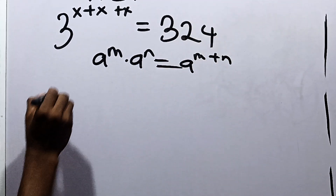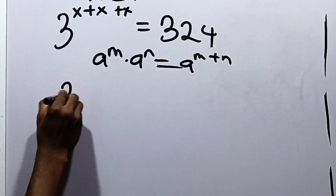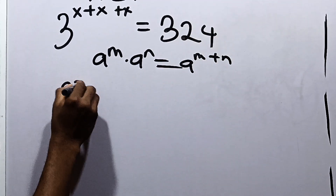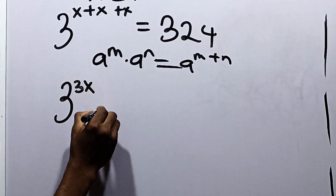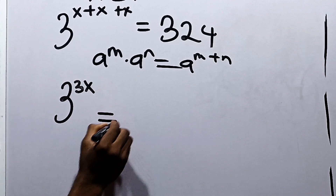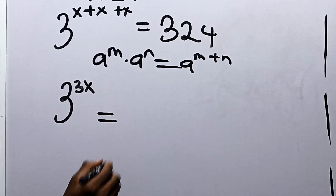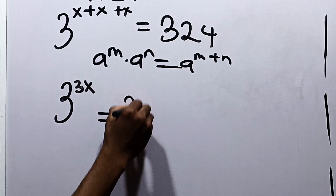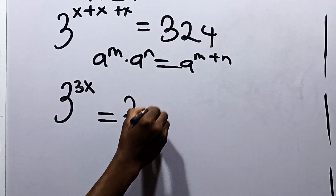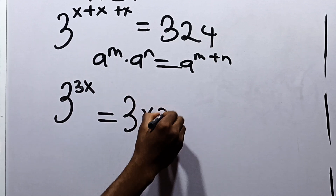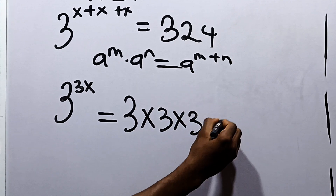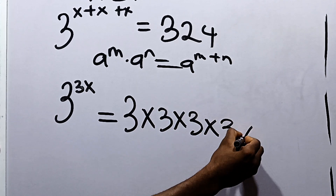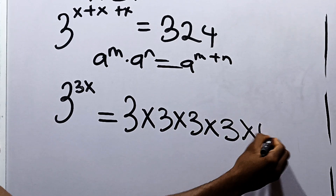Now x plus x plus x is 3x. So we have 3 raised to the power 3x equal to 324. And 324 is the same as 3 times 3 times 3 times 3 times 4.